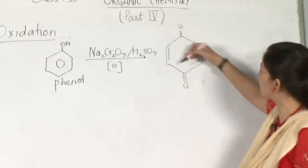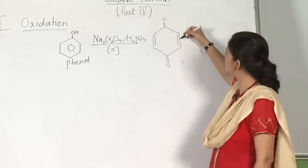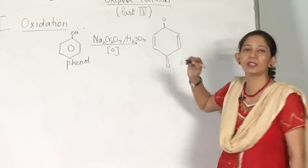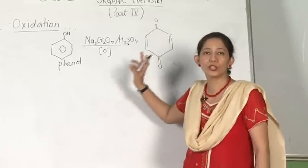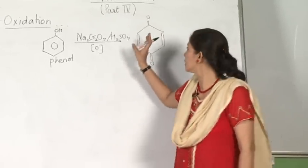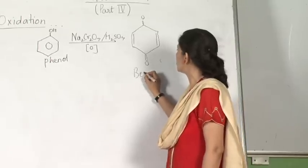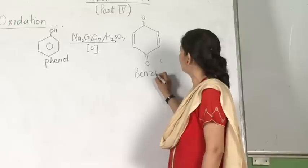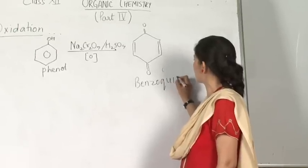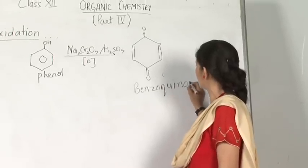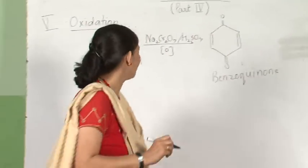Here: double bond, single bond, double bond, single bond, double bond, single bond, double bond — and this I can call a conjugated diketone. This is called benzoquinone. This conversion has been asked: convert phenol to benzoquinone.